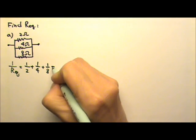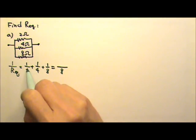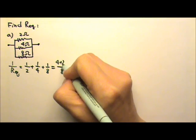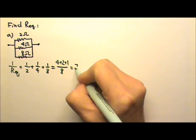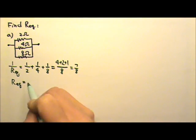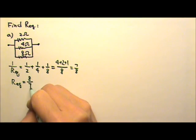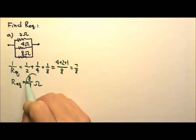And this equals to the common denominator 8, and that's 4 plus 2 plus 1, so it's 7 eighths. And that means to find the equivalent resistance, we have to flip both sides. So this is 8 sevenths ohms. So that's the answer.